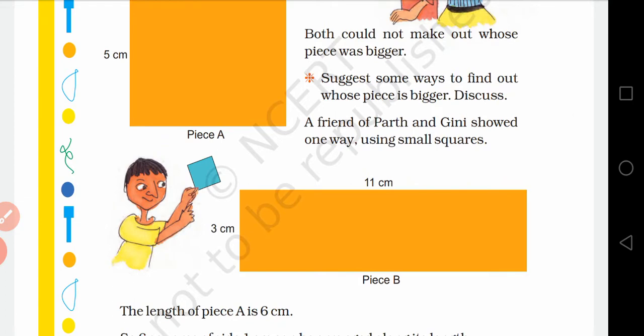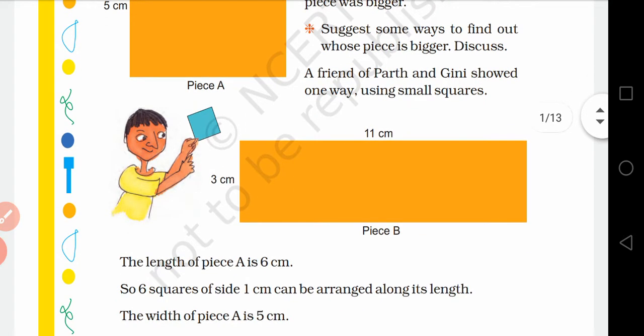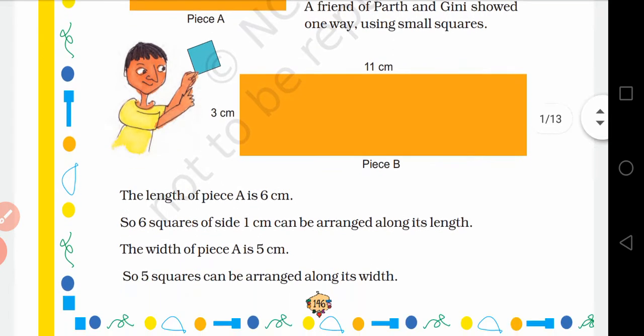Abhi unko confusion ye hai ki kiska shape bada hai - Perth ka ya Ginni ka. Ek hai square shaped aur ek hai rectangular shaped. Suggest some ways to find out whose piece is bigger. A friend of Perth and Ginni showed one way using small squares. Unka ek dost tha, jisne bola ki agar hum small small square ko rakhte jayenge ek shape me, jitne squares rakhenge usi hisaab se hum kya karenge na uska area bata payenge by counting the squares.